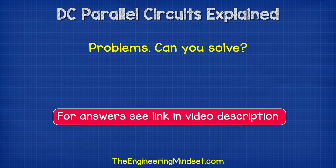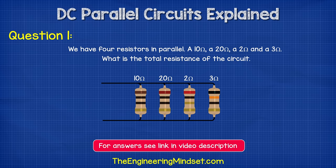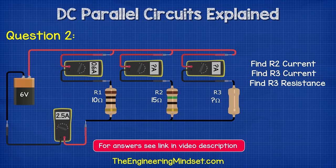Now let's see if you can solve these problems — I'll leave a link in the video description for the answers and solutions. Question one: we have four resistors in parallel — a 10 ohm, a 20 ohm, a 2 ohm, and a 3 ohm. What is the total resistance of the circuit? Question two: we have three resistors connected in parallel to a 6 volt battery. The total current in the circuit is 2.5 amps. Resistor one is 10 ohms with a current of 0.6 amps. Resistor two is 15 ohms with an unknown current. Resistor three has an unknown resistance and an unknown current. Calculate the current in resistor two, and the current and resistance of resistor three.